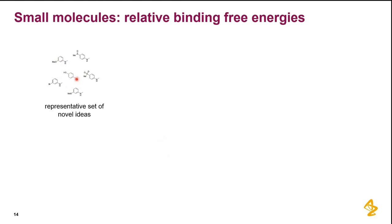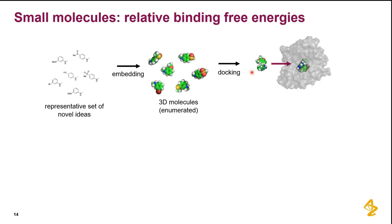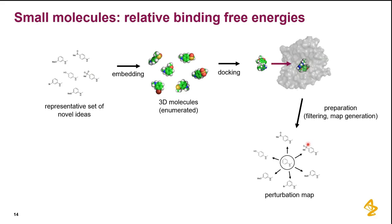Binding affinity is a very important criterion. The first step is to embed these 2D molecules in 3D, taking care of stereochemistry, protonation states, etc. Then you use docking to fit these molecules into the binding cleft defined using the reference ligand. You typically start with one or multiple X-ray structures and experimentally determined binding affinities. From that you construct a perturbation map — pairwise transitions between compounds.